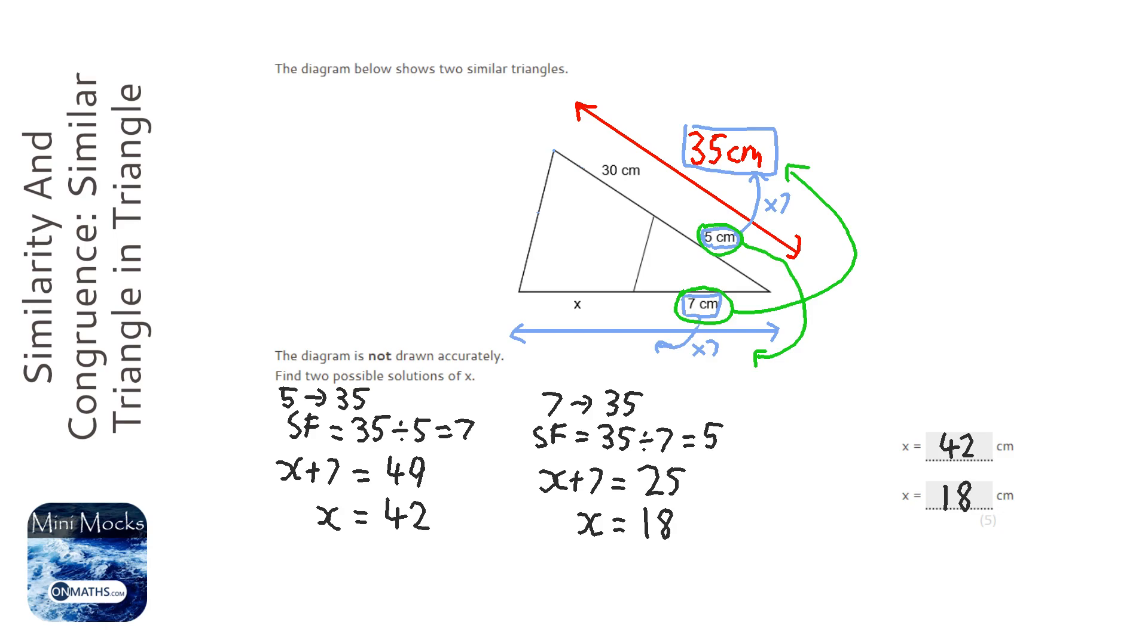It's very difficult to get your head around that because it's so convincing that these two lines are parallel, but they're definitely not. The hint in the question is that it's saying that the diagram is not drawn accurately.